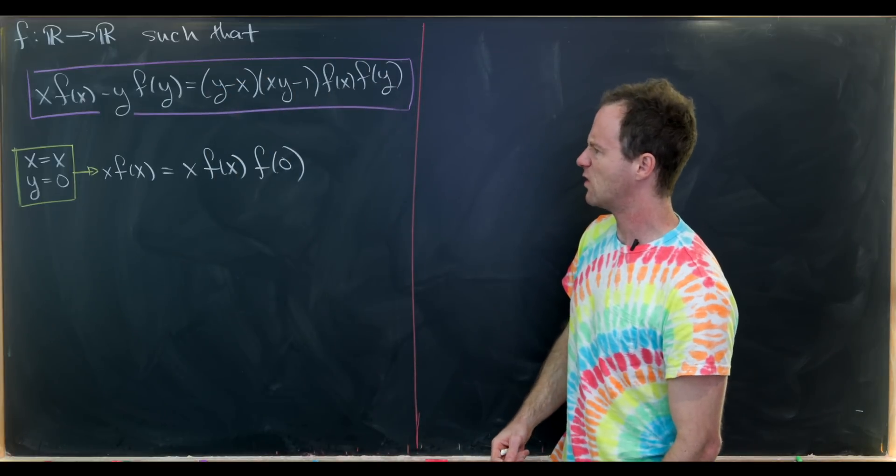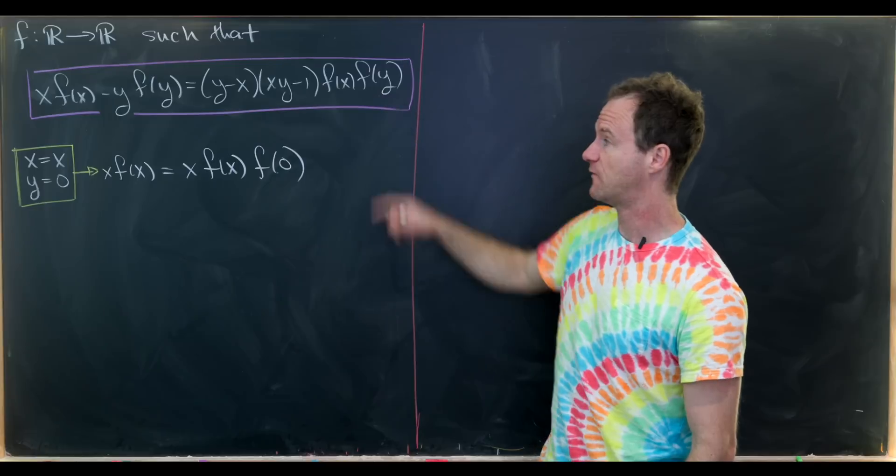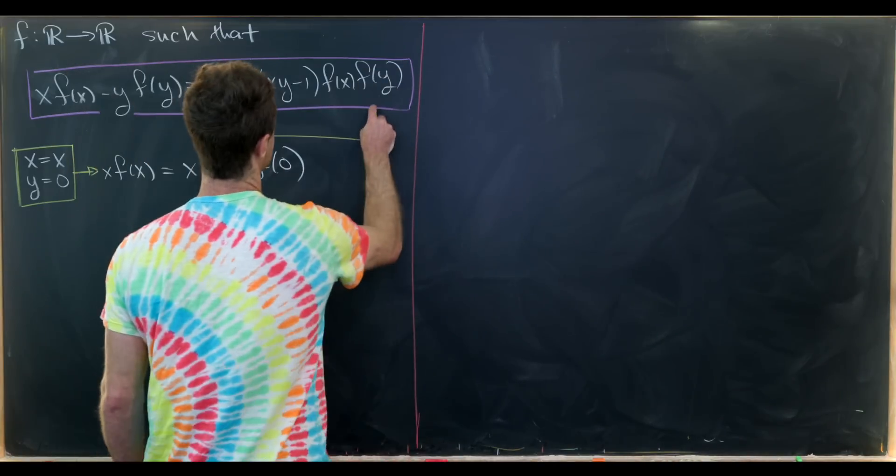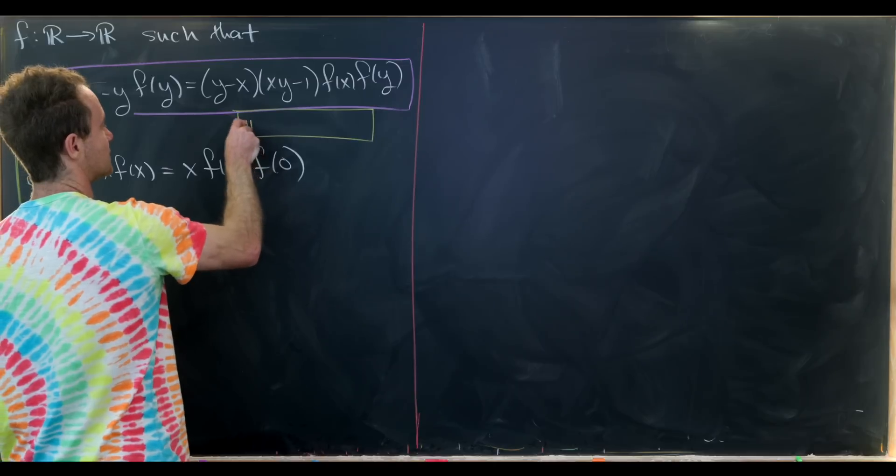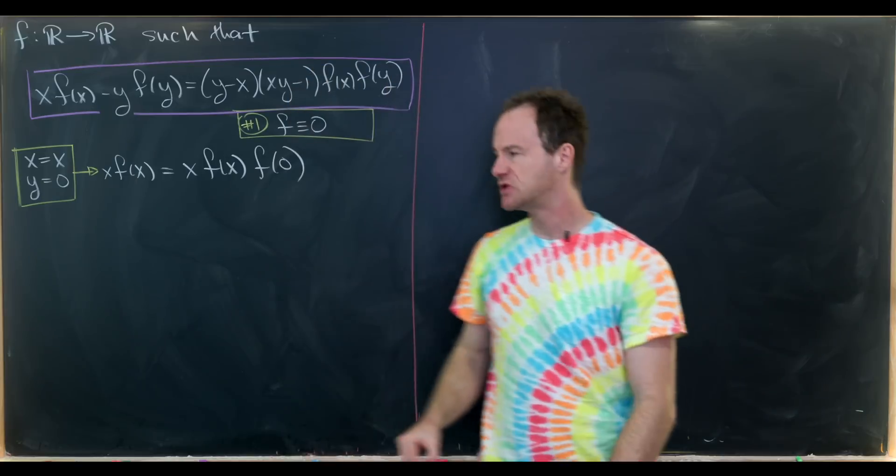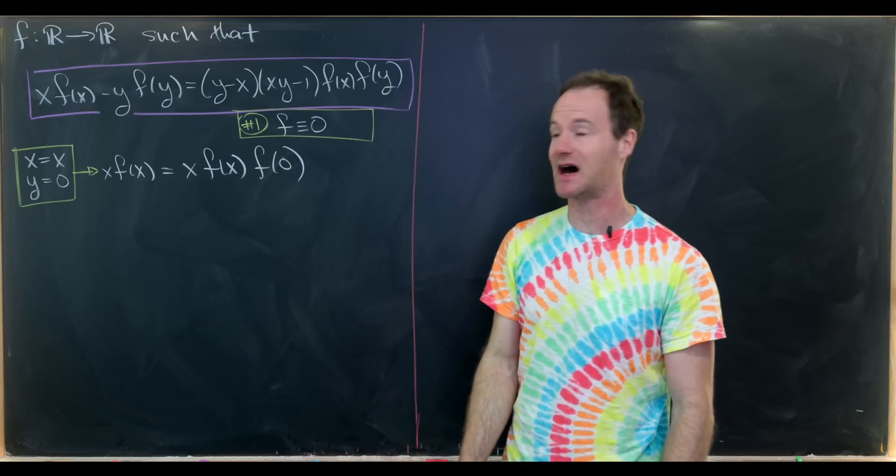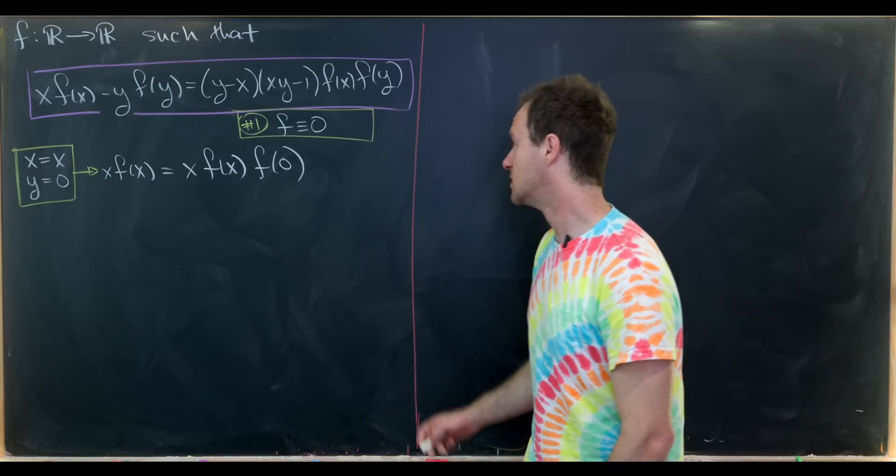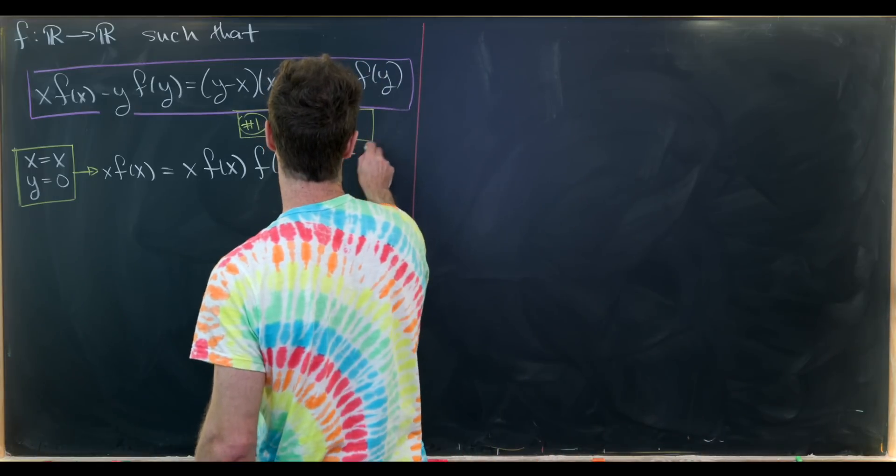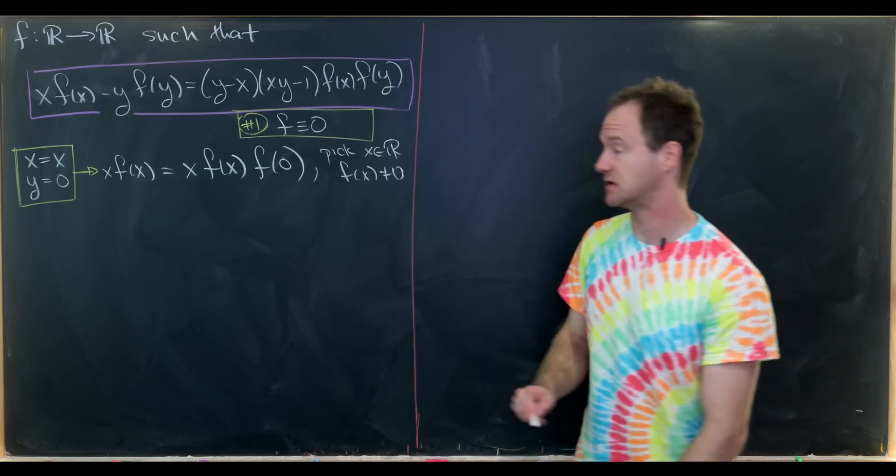Now let's notice that this functional equation actually holds for the function that is identically 0. So that's maybe our first solution - the function which is identically 0. In fact we're really looking for interesting solutions which are the ones where it's not identically 0.